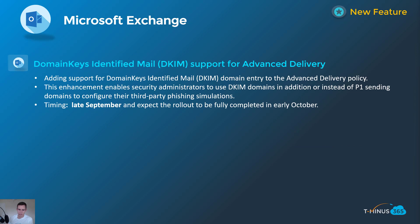The last Exchange item: DomainKeys Identified Mail (DKIM) support for advanced delivery is basically allowing you to customize advanced delivery for domains that use DKIM. This gives you the ability to configure them for third-party phishing simulations versus trying to leverage just Microsoft's phishing simulation for domains that have DKIM set up — enhancing that experience and giving you more flexibility. That'll happen in late September and be complete by early October.